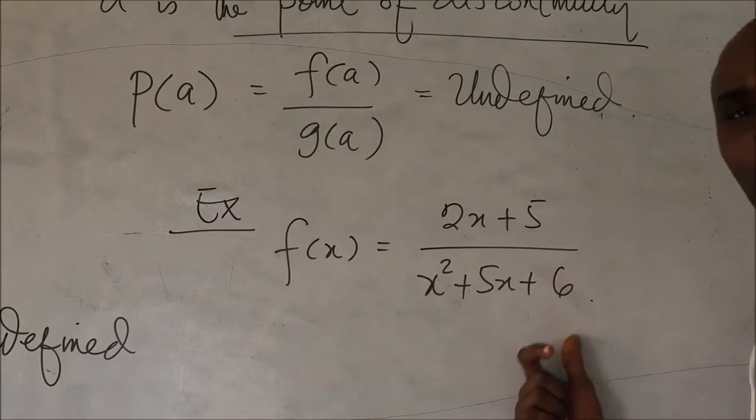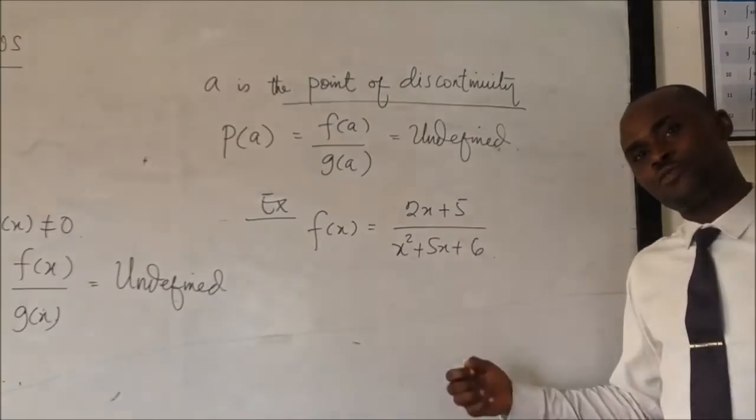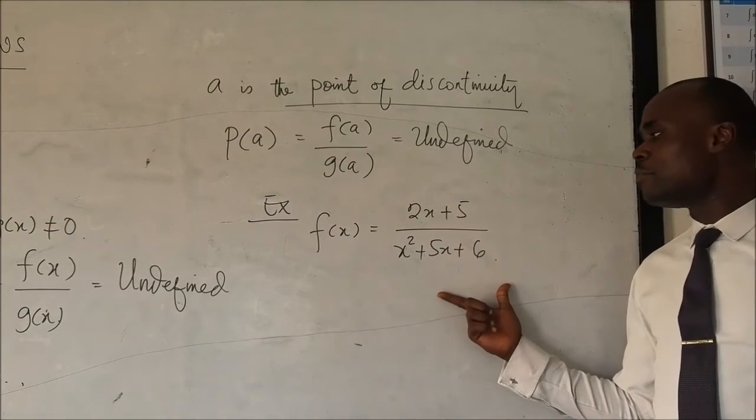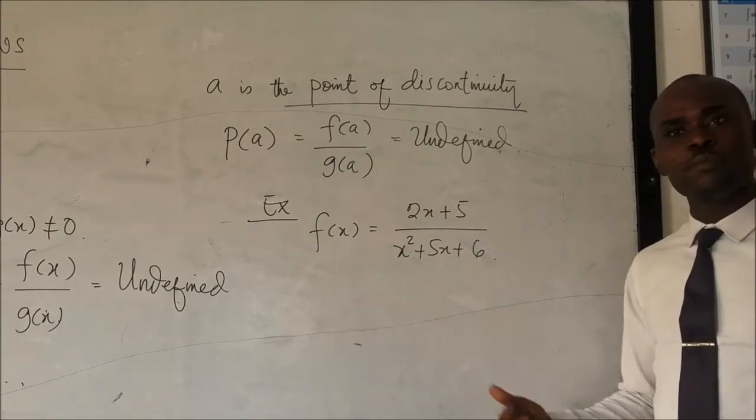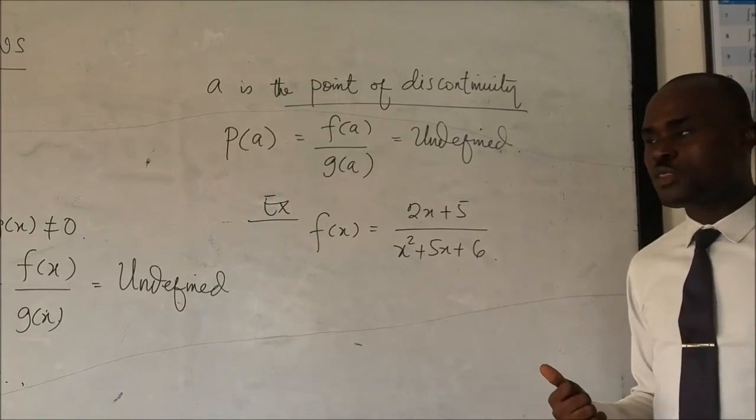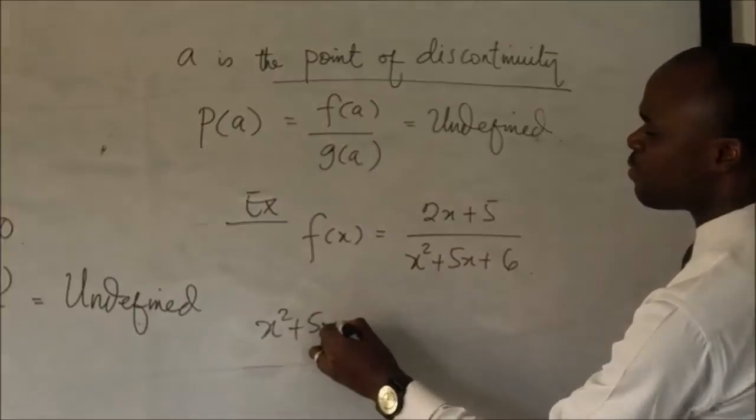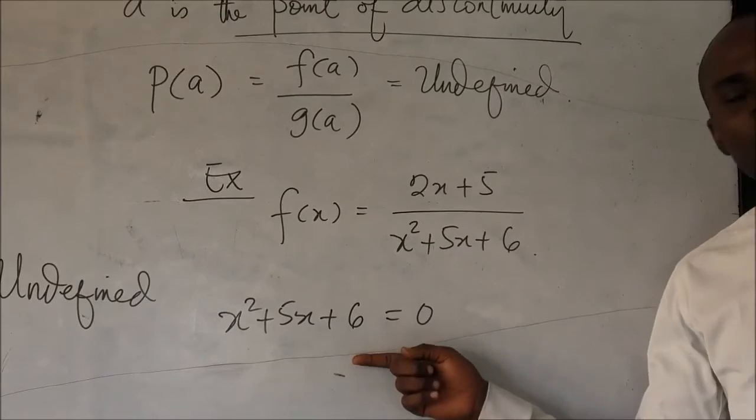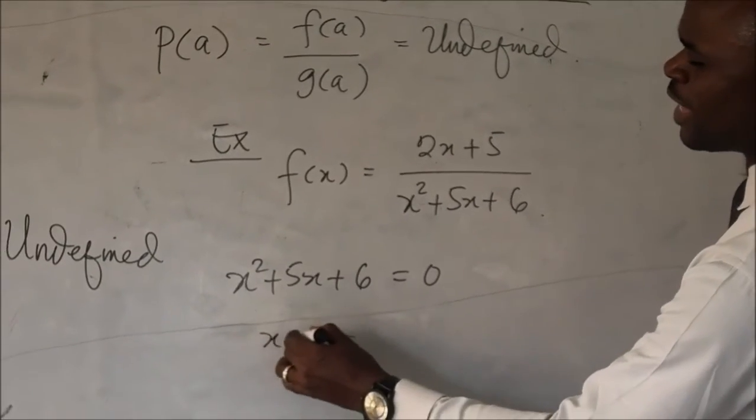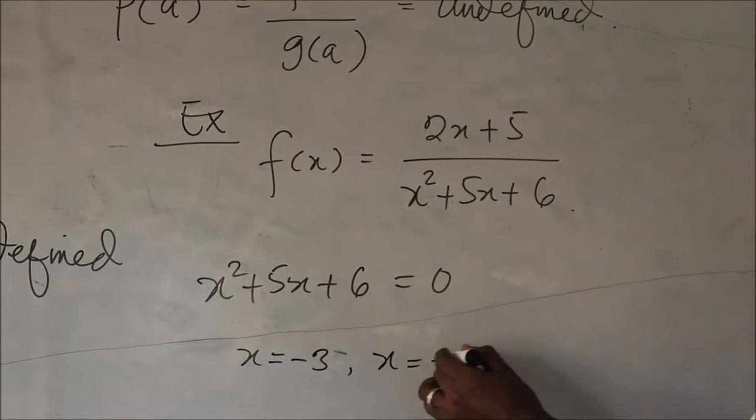This is an interesting question they ask junior students, grade 12 students. They ask them for which value will this function be undefined. All you need to do is equate this x squared plus 5x plus 6 to zero. And that gives you a quadratic equation. Solving this quadratic equation you will see that your x will be equals to minus 3 and your x will be equals to minus 2.